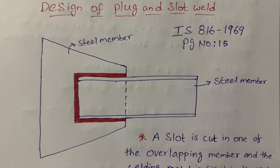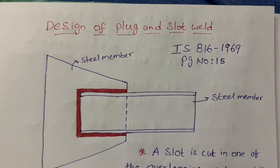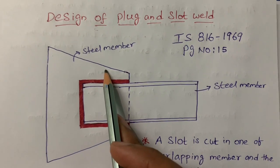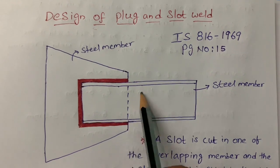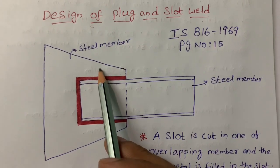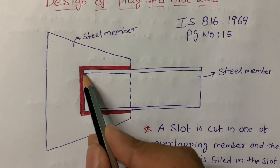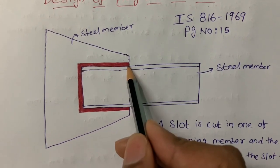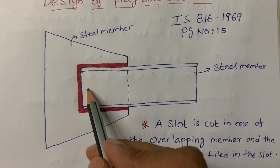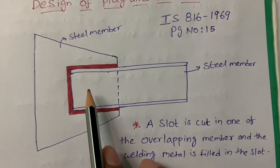Hello everyone, now I am explaining about design of plug and slot weld. This is a type of fillet weld. Suppose this is one steel member and this is another steel member. The red color portion is the welding and this is an overlap — the steel member is overlapped by another steel member. When the overlap length is limited, we apply the slot or plug weld.